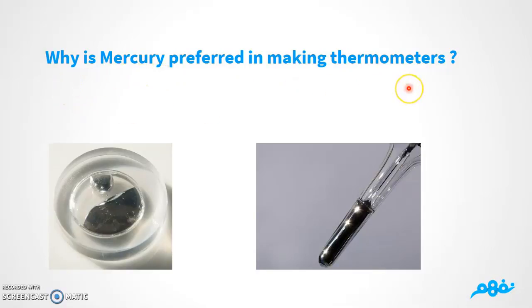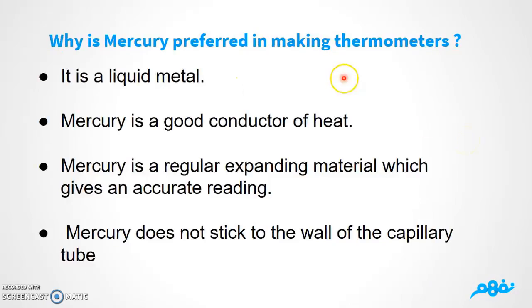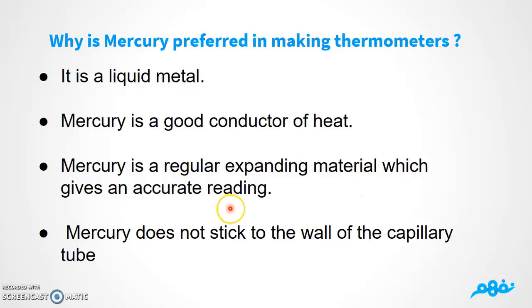Why is mercury preferred in making thermometers? Number one, it is a liquid metal. Number two, mercury is a good conductor of heat — there are materials that are good conductors and bad conductors of heat, and mercury is a good conductor, which is very important for accurate temperature measurement. Number three, mercury is a regular expanding material, which gives an accurate reading.